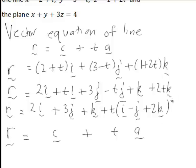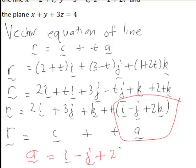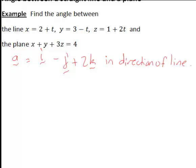Where clearly now a is this part here. That is, in this case a vector in the direction of the line a is in fact i minus j plus 2k. So this is what we have found.